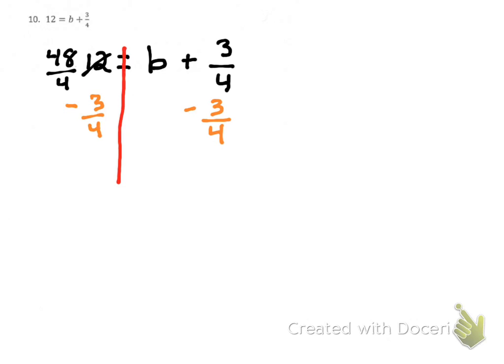So when we subtract 3 fourths over from the right, we're left with just B. Okay, from the left, we're going to do 48 minus 3, which is 45 on top. And this is subtracting, so our denominator stays the same. So B is equal to 45 fourths, which if we do some long division real quick to see how many times 4 goes into 45, we end up with...